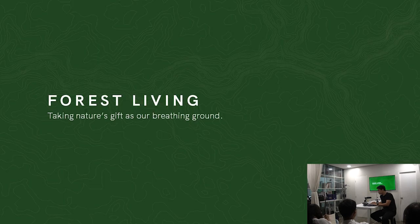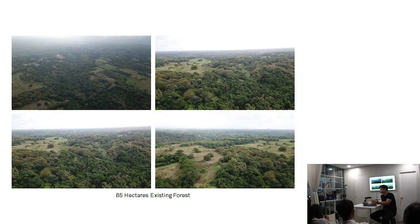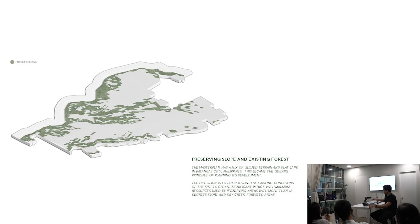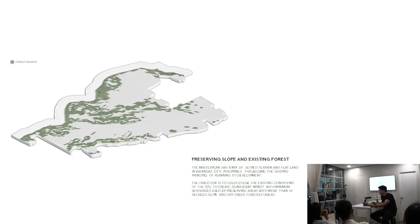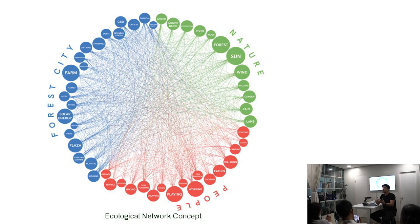Batangas Forest Living — taking nature's gift as our breathing ground. The site is 300 hectares. When we visited, we mapped out areas we could build on and existing nature to preserve. Luckily there is a creek in the middle with an existing overgrown forest, which we planned to preserve along with slopes and existing forest areas. The ecological network concept connects forest, nature, and people — what we wanted was to create an urban ecosystem or a regenerative city.